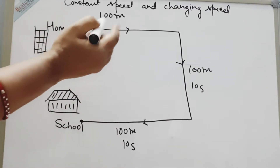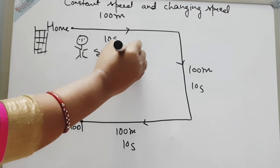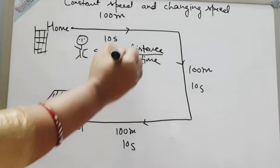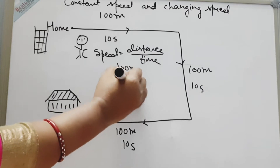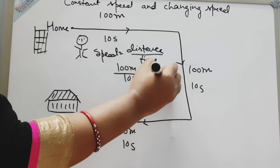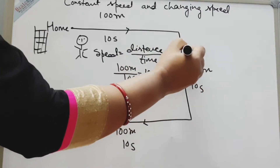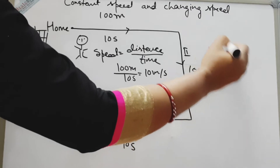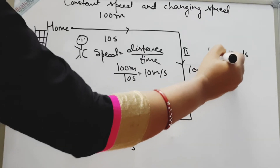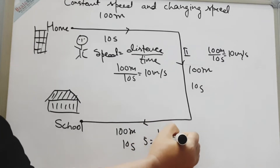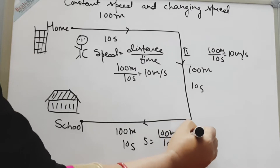For the first section, speed is equal to distance by time. Distance is 100 meters and time is 10 seconds, so speed will be equal to 10 meters per second. For the second section, distance is 100 and time is 10, so speed will be 10 meters per second. In the third section also, distance is 100 and time is 10 seconds, so speed will be equal to 10 meters per second.